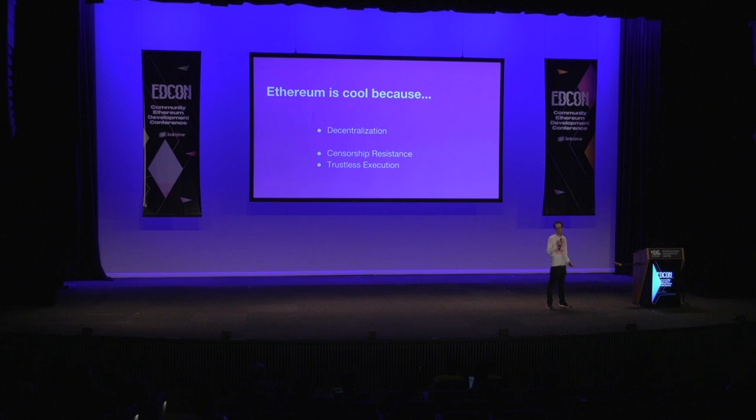A lot of the projects built on top of Ethereum in 2017 didn't really have all of these key properties. They might have had some of them like decentralization or trusted execution, but for the most part they had admin private keys, they could be shut down. EtherDelta had an off-chain order book, controlled listing of tokens, listing fees — stuff like that.